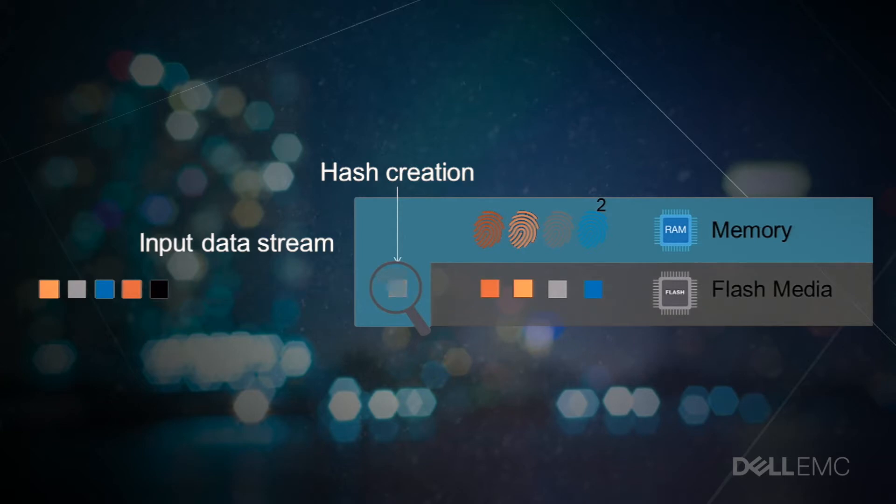Now, let's say the host tries to write a data block that already exists in the array, in a different address. When the block enters the array, a hash is generated again, but the array recognizes that the hash for the block already exists, and it simply increases that hash reference count. It then points the new address to the existing hash, and skips writing the block to disk.